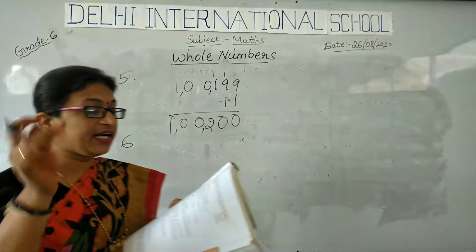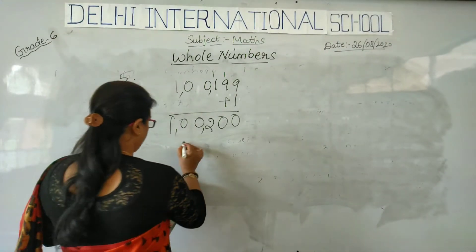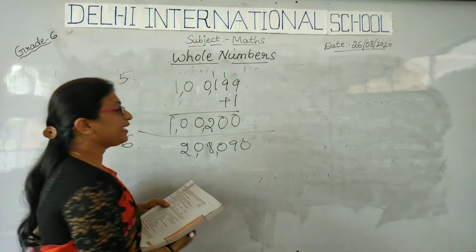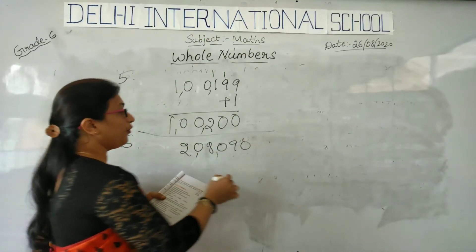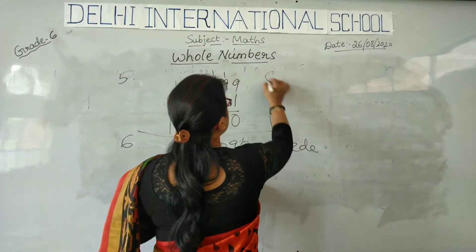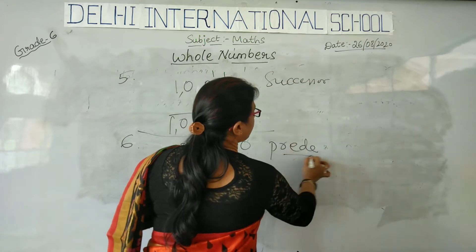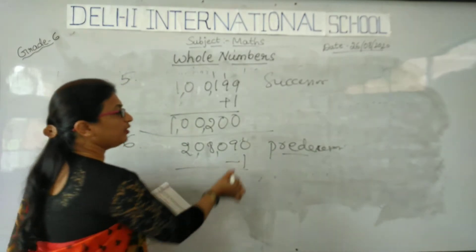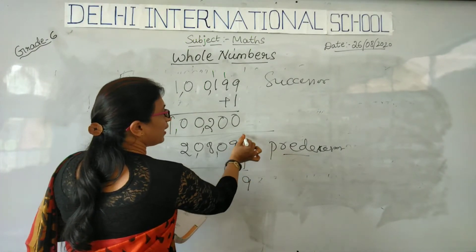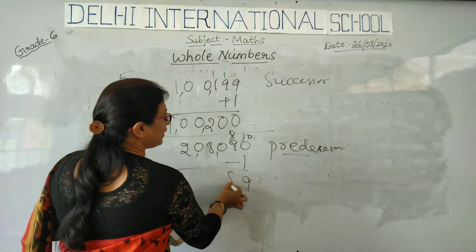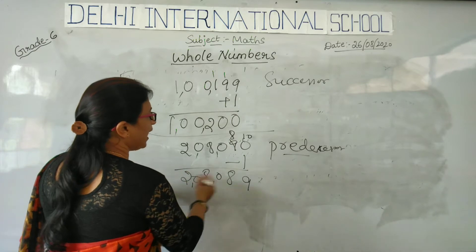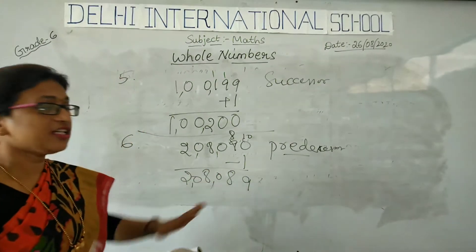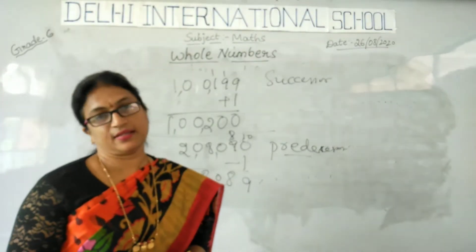Problem 6: write the predecessor of 2,080 and 90. They have asked for the predecessor. To find the predecessor I have to do minus 1. So 2,0890 minus 1 — 10 minus 1 is 9, so you get 2,0089. Like that, subtract 1 from all these numbers to get the predecessor.